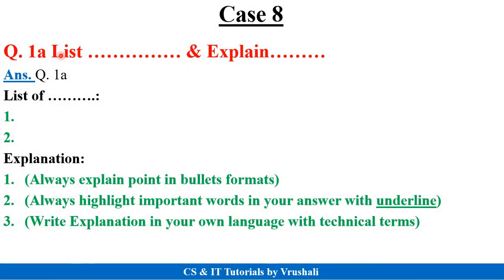The last case is 'list and explain.' List means you only list items — 1, 2, 3, 4. For example, list of machine learning types: give the heading 'List of Machine Learning Types' and mention 1, 2, 3, 4. Then for the explain part, give the heading 'Explanation' and explain it. While explaining, remember three things: always use numbering format, underline important words, and explain in your own language with technical terms.